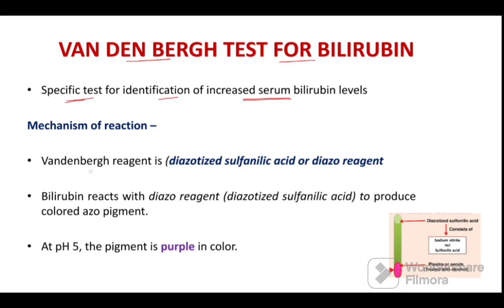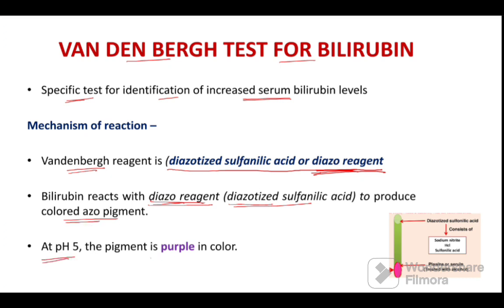Mechanism of reaction: the Vandenberg reagent is diacetized sulfanilic acid, otherwise called as diazo reagent. Bilirubin reacts with this diazo reagent to produce a colored azo pigment. This pigment at pH 5 is purple in color.